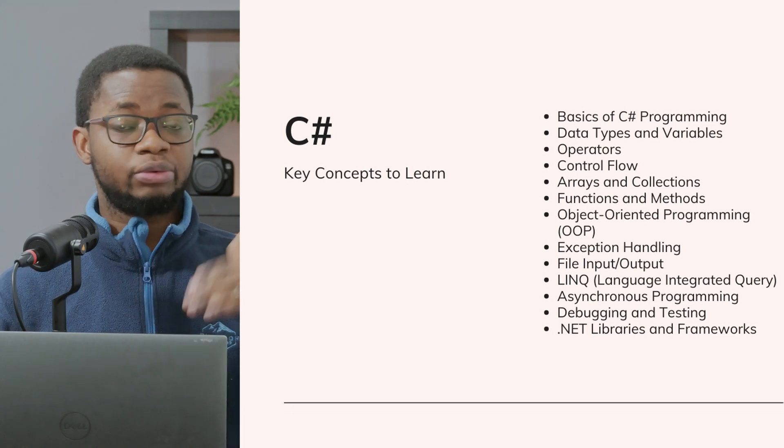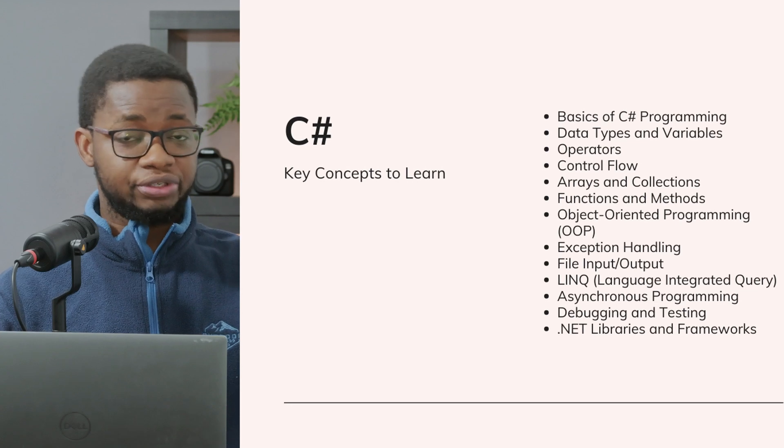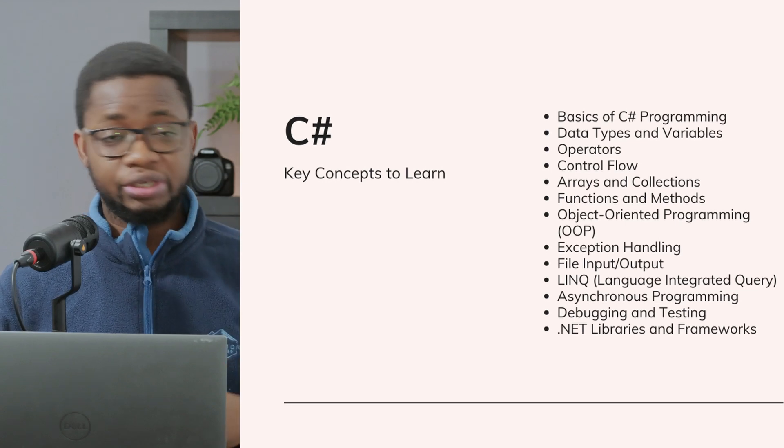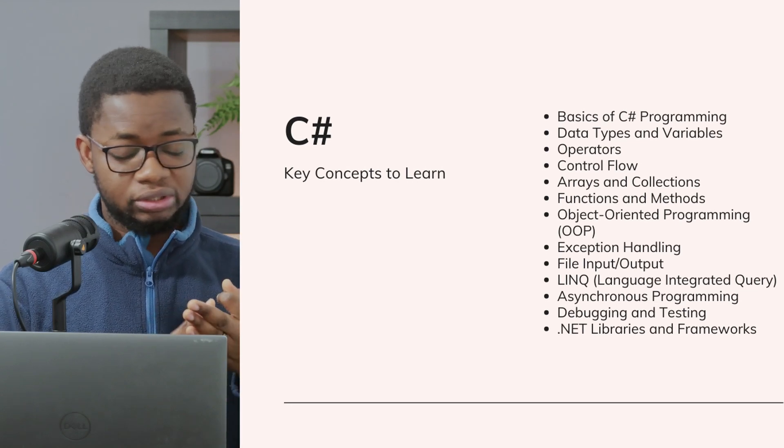But generally, for the basics, you're pretty much covered with the topics mentioned: loops, control flow, data types, and all of that. Once you've learned the fundamentals of programming with C#, the next thing you want to do is pick your pathway, because learning how to write console apps is not the end of the world. The exciting part is actually deciding your pathway.